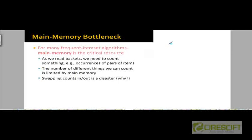In the first pass, it's going to keep track of only frequent item sets where the size of the item set is a single item — we are going to keep track of singleton sets. Then in the second pass, we are going to look at pairs of items. In the third pass, we are going to look at triples of items. So in each pass, we will have to keep track of either pairs, triples, or some subset of items of some size.